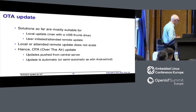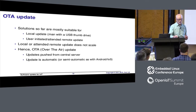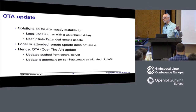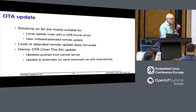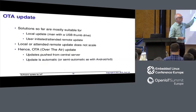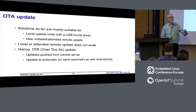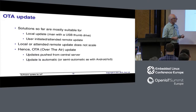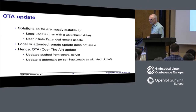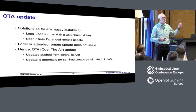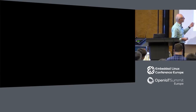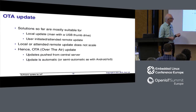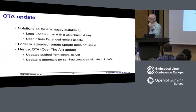There are two well-known and operational solutions for the basic update client component. This works fine for the local update case — the classic person with a USB thumb drive going around updating each machine individually. These update clients also support remote streaming, allowing you to download an image from a remote server. But typically that download is user-initiated and user-attended. For these reasons, what we have so far doesn't scale to large deployments.